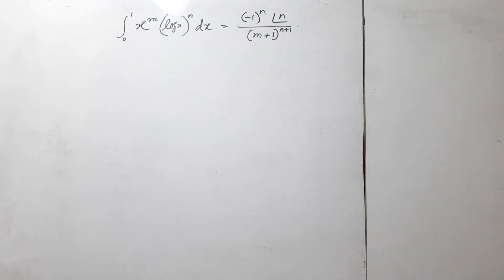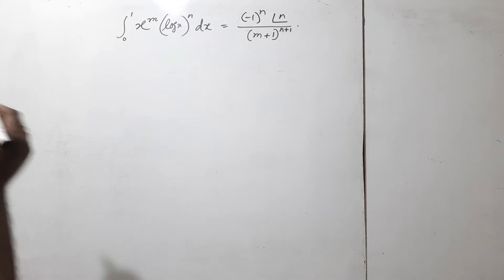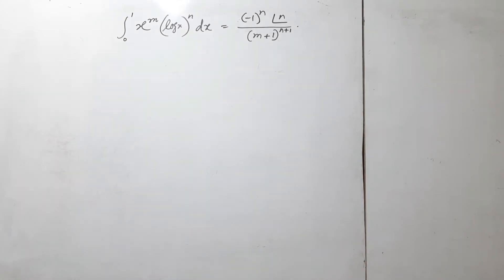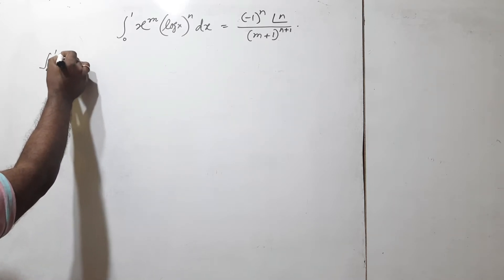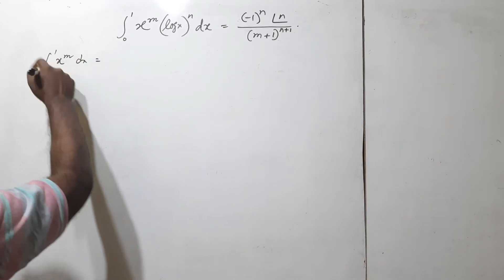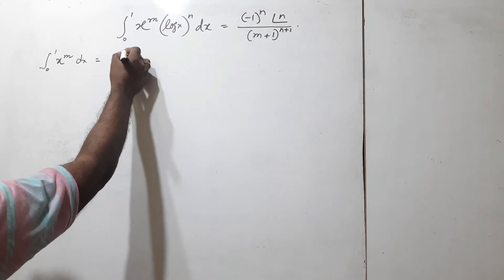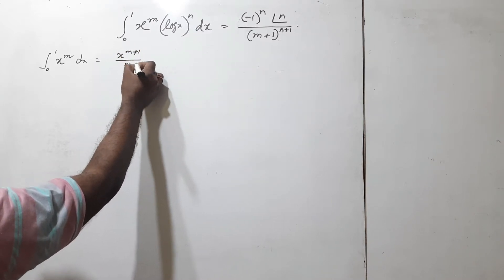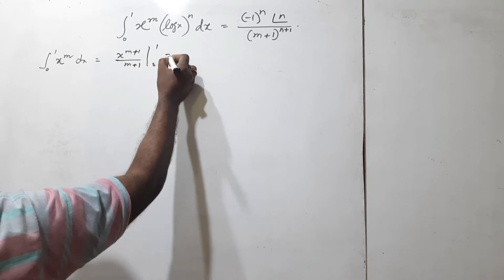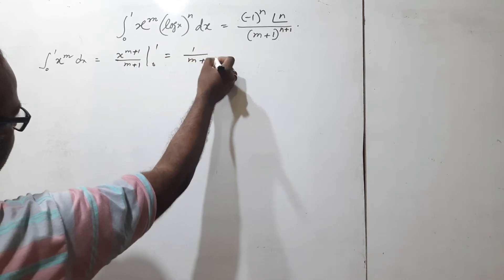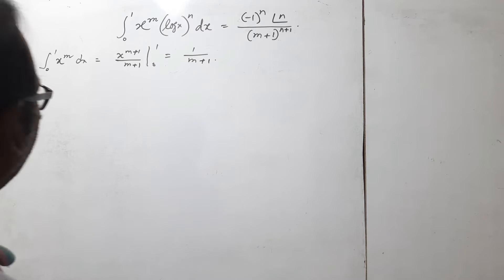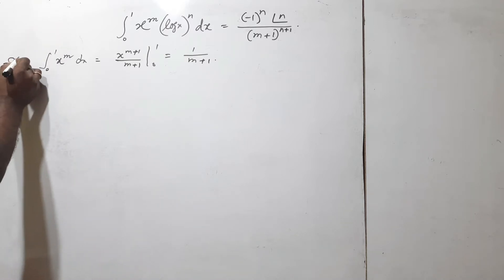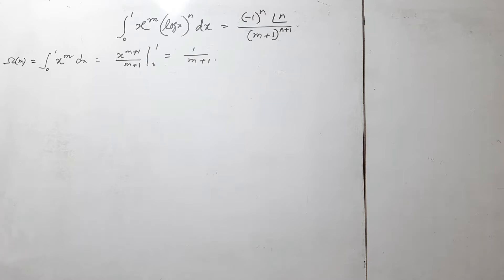The procedure and technique for this integral: let us assume another integral of the form from 0 to 1 of x to the power m dx. You know the integration of this — it is very simple. This is x to the power (m+1) over (m+1). We put the limits 0 to 1, so the result is 1 over (m+1). This is the parameter m. Now let us call another function ρ(m). If we differentiate with respect to m, then m is the parameter — let us assume it is a variable.